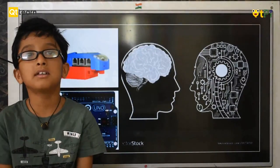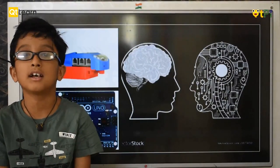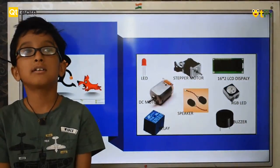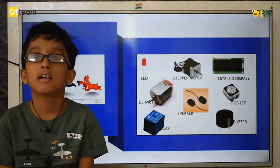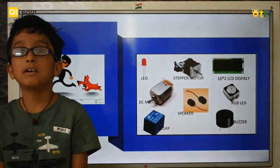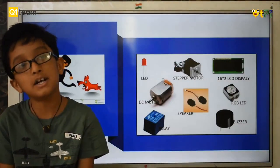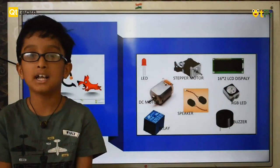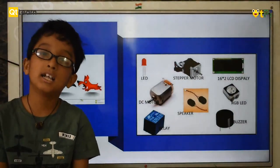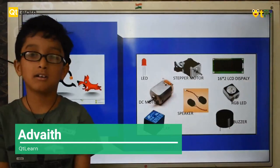When we humans sense something in the surrounding — say a dog is chasing us — our output is running. Same for a robot: when it senses something, the output can be a movement, sound, or making a light bulb glow. Examples include LED, buzzer, and motor.